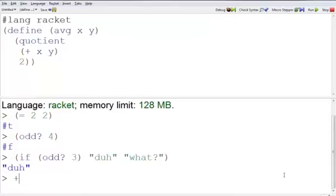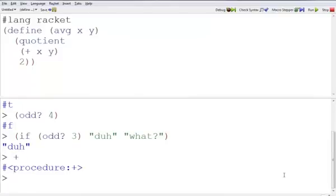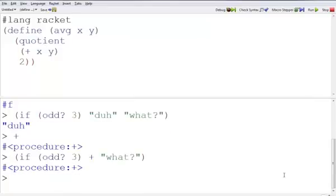In racket, functions act just like other variables. So when I type plus at the command line, it just returns the procedure plus. I can also return plus from my if. So I say if 3 is odd, then I'm going to return plus, otherwise I'm going to return what. And this, because 3 is odd, returns plus.